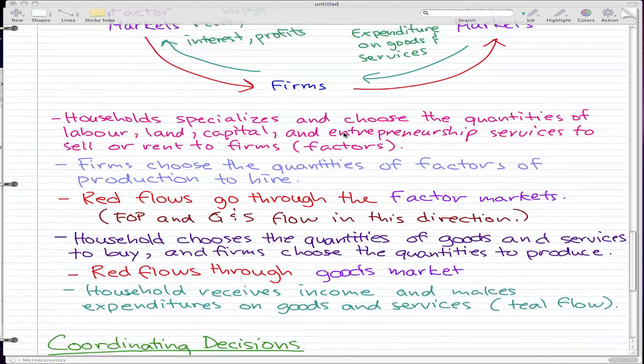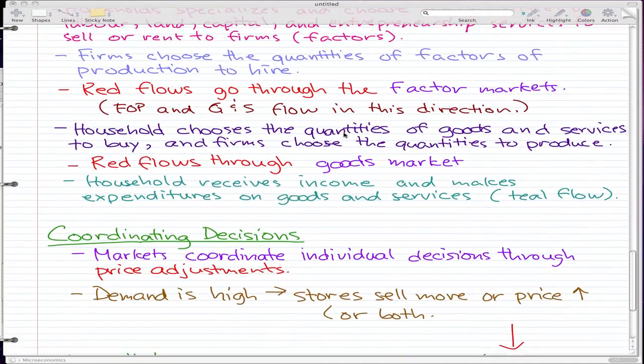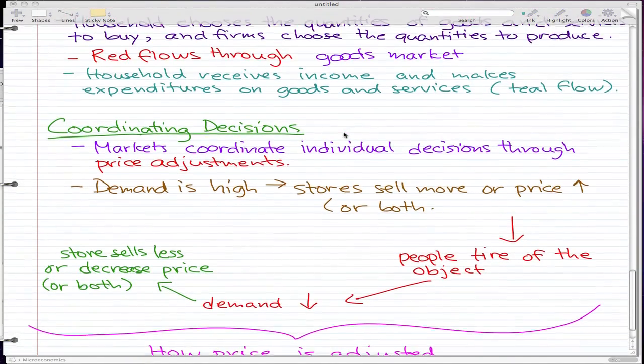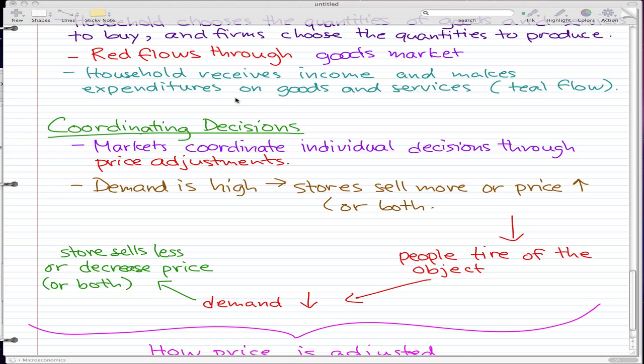But there's one last thing that I want to go through, and that's coordinating decisions. Now, the way that markets coordinate is that markets coordinate individual decisions, so our decisions through price adjustments.